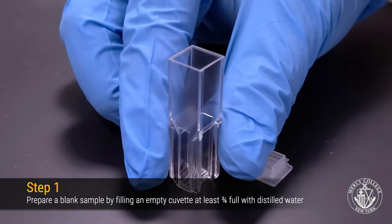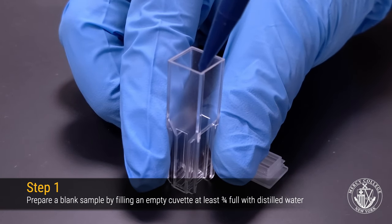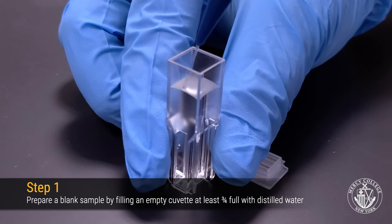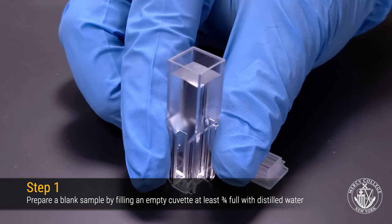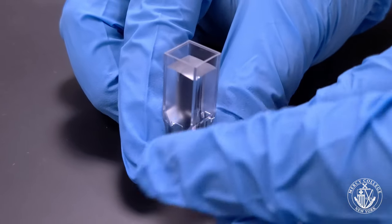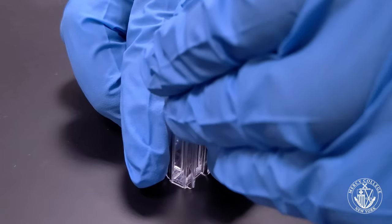First, we'll take an empty polystyrene cuvette and fill it at least three-quarters full with distilled water. This will function as a blank or reference sample in our experiment. If you have a cuvette cap available, go ahead and cap the cuvette to avoid spilling it during the experiment.